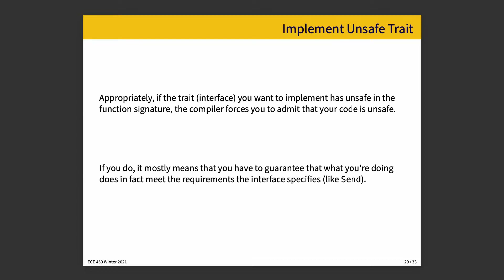The third thing you can do in the list is implement an unsafe trait. If the trait — or interface — you want to implement is itself unsafe and says so in its signature, the compiler forces you to admit that your implementation is also unsafe. By doing so, you are acknowledging that you guarantee your implementation meets the requirements the interface specifies, like `Send` — ensuring you can move this between threads with no issues. The unsafe keyword says the responsibility is on you to live up to that promise.